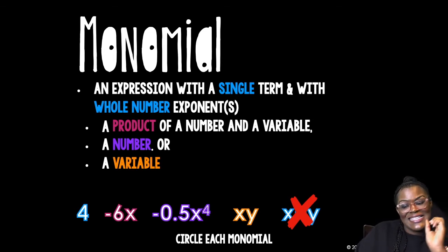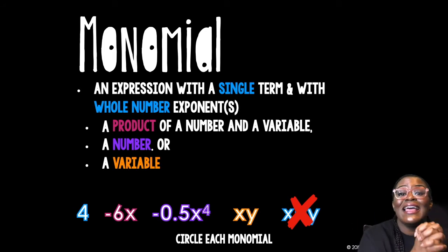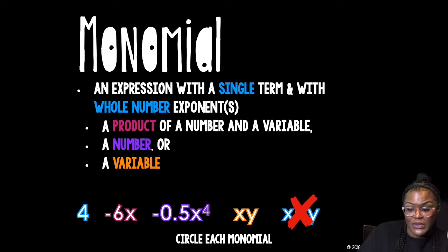Negative six x is a monomial because it is the product of a number and a variable, the pink bullet point. Negative 0.5 x to the fourth is a monomial. Even though you got a 0.5, you got an x and you got a fourth, it's like three things, but they all touching. So that makes it a monomial.